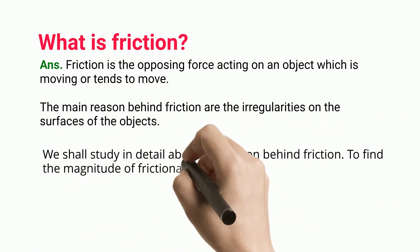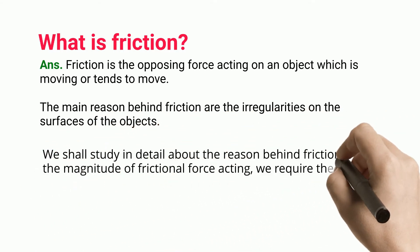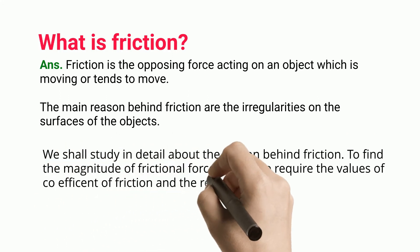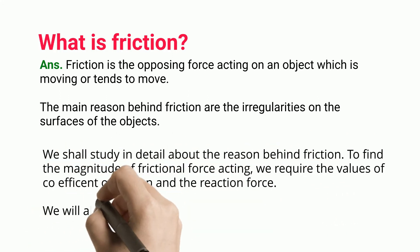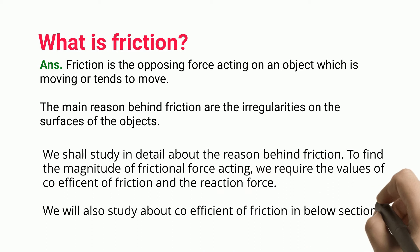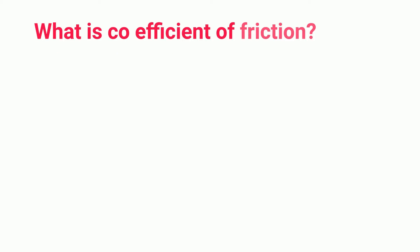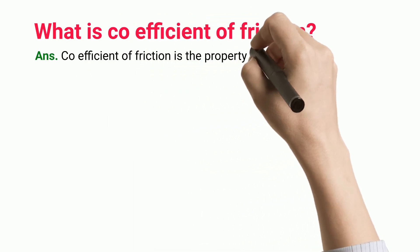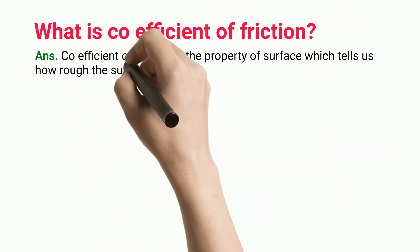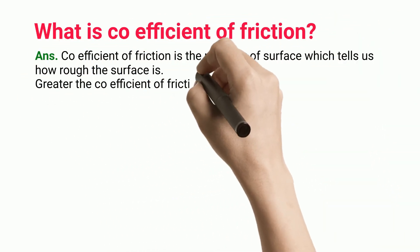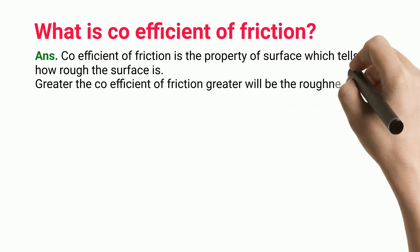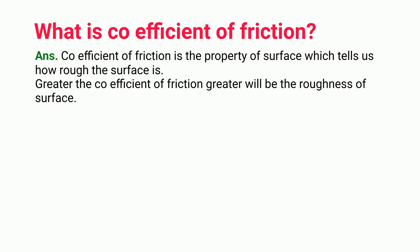To find the magnitude of frictional force acting, we require the values of coefficient of friction and the reaction force. We will also study about coefficient of friction in the sections below. Coefficient of friction is the property of a surface which tells us how rough the surface is. Greater the coefficient of friction, greater will be the roughness of the surface.